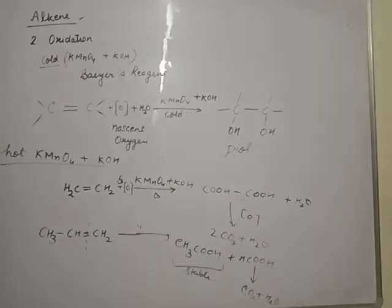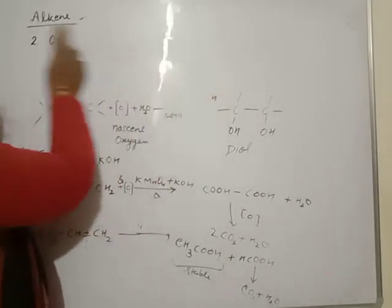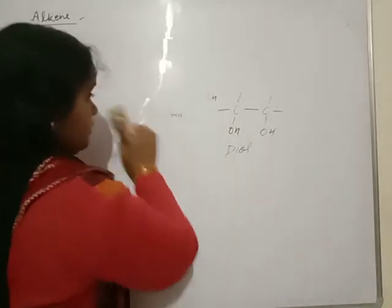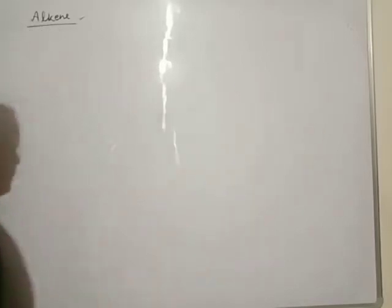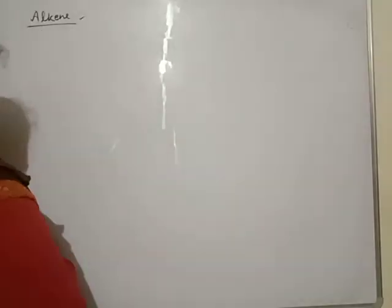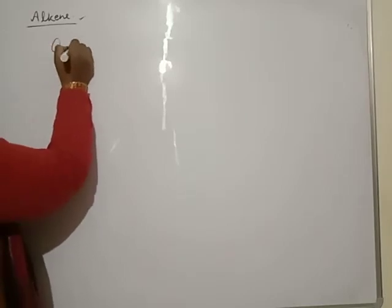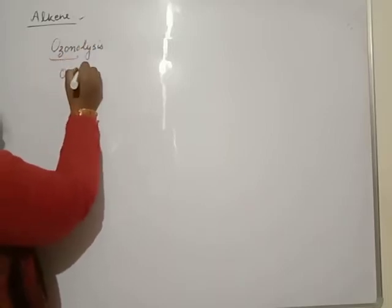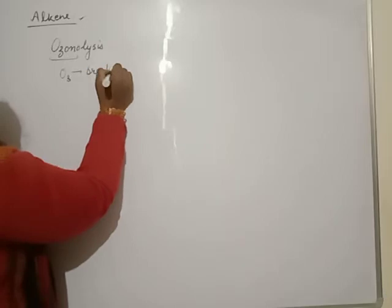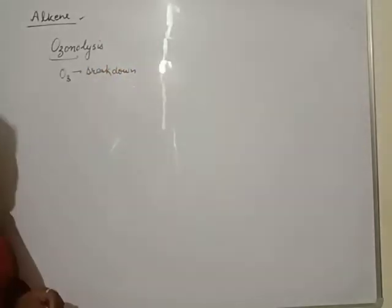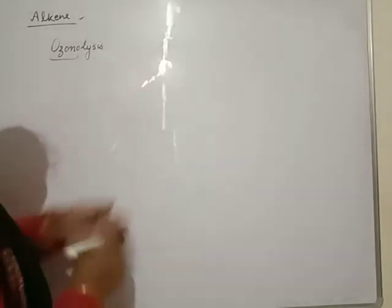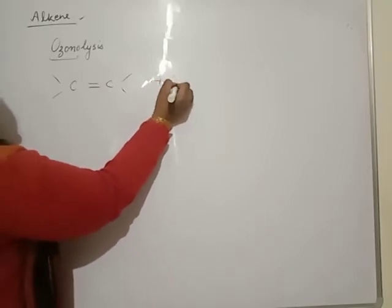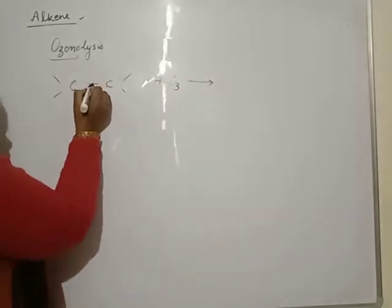One more oxidation. Oxidation that is known as oxidation of alkene to aldehyde or ketone. This will be done with the help of ozone. In this reaction, ozone molecule decomposes. Then this process is known as ozonolysis. Ozonolysis means breakdown.